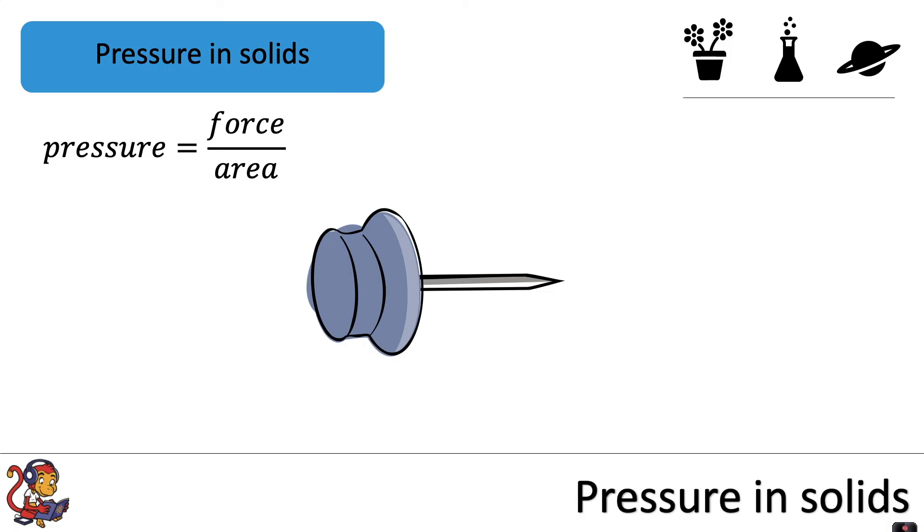Let's look back at the drawing pin for a final example. If we use the pressure equals force divided by area equation, let's say we applied a force of 20 newtons onto the drawing pin and it had an area of one centimeter squared. The pressure that that drawing pin exerted on our thumb would be 20 newtons per centimeter squared.